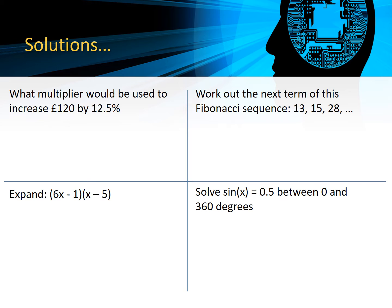Here are the solutions. First of all, what multiplier would we use to increase £120 by 12.5%? Remember we're starting with 100%, we're adding 12.5% to it, giving us 112.5%, which is this multiplier here: 120 × 1.125.